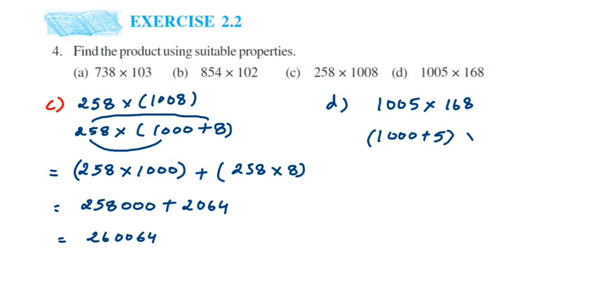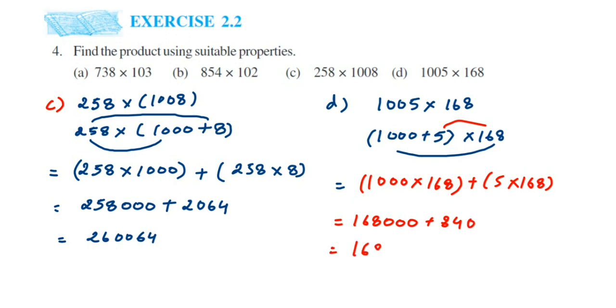Same thing: multiply 168 with 1,000, then plus sign, then 5 × 168. This will be 168,000 (168 followed by three zeros). When you multiply 168 with 5 we get 840. Add these to get 168,840.